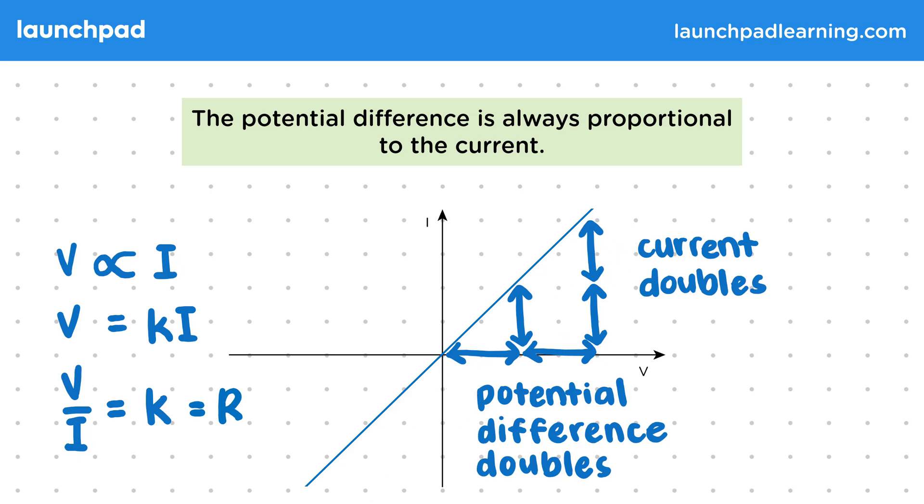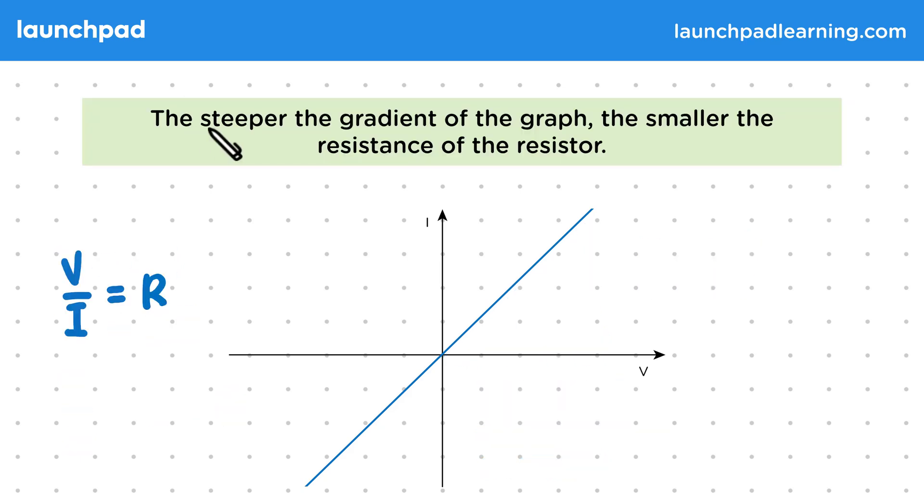But how does this resistance value affect the graph? The steeper the gradient of the graph, the smaller the resistance of the resistor. Now, you might think that steeper gradients would mean greater resistances, but remember that the gradient of the graph is found by dividing a change in Y value, in this case I, by a change in X values, in this case V.